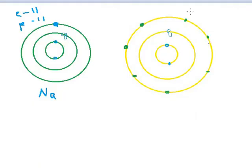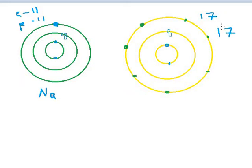Similarly, if you look at chlorine, it has 2 electrons in the first orbit, 8 in the second, and 7 in the outermost orbit. So the number of electrons is 17, and the number of protons is also 17. If you subtract 17 minus 17, it will be 0. So chlorine does not have any charge — it is also a neutral atom.